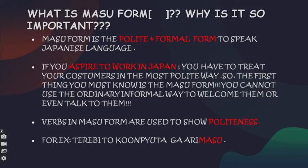What is masu form and why is it so important? Masu form is the polite and formal form to speak Japanese. We differentiate between outsiders and our own family members or friends. You can use the impolite dictionary forms of verbs for friends of the same age group or family, but for outsiders you cannot. You need to use the masu form.